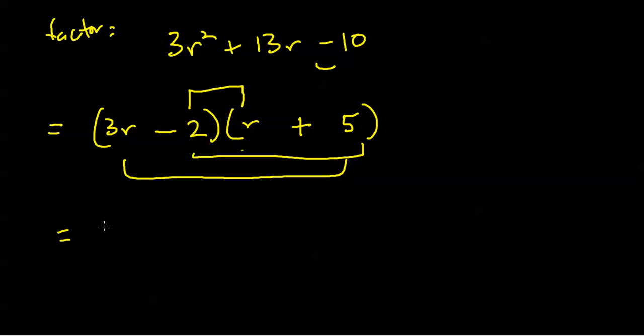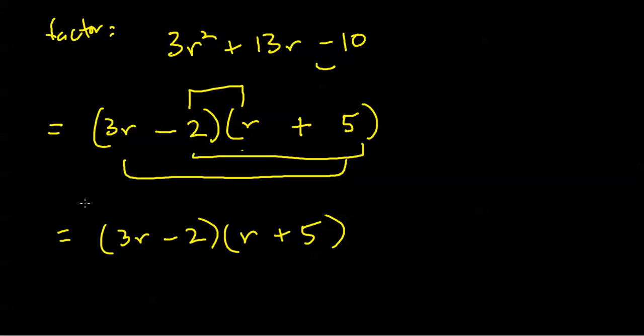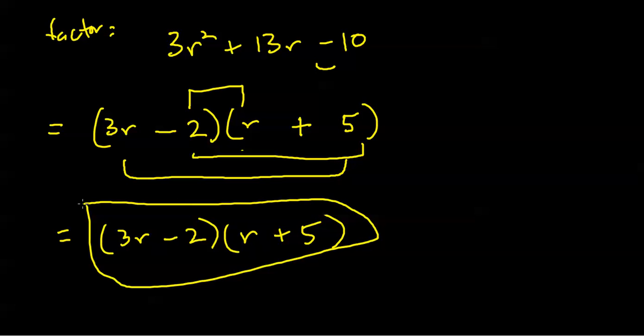On some of the harder ones you're going to have to sweat a little bit. The more you practice, the better you'll get at seeing things ahead of time. So your final answer here is 3r minus 2 times r plus 5.